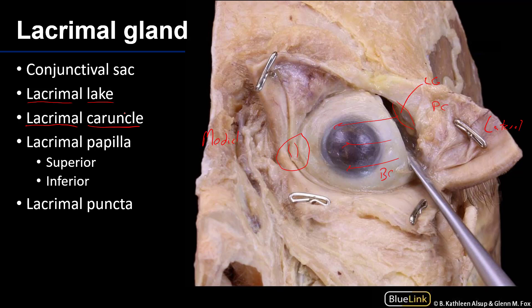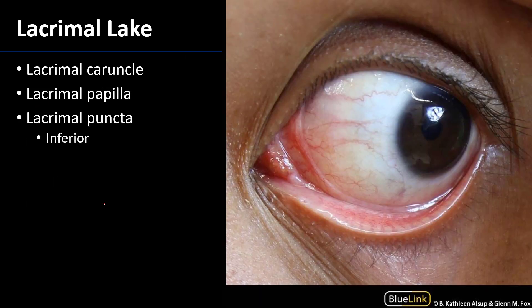Embedded in the superior and inferior eyelids are canaliculi — little canals that drain tears even deeper. Feeding into these canals are lacrimal papillae, which are elevations that host the lacrimal puncta. The lacrimal puncta are what feed into the lacrimal canaliculi, or canals, as we'll see in a moment.